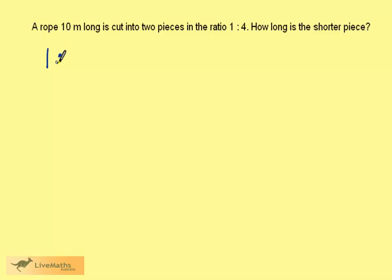We have a ratio of 1 to 4. 1 plus 4 equals 5, telling us that we need to divide the rope into 5 equal parts. The rope is 10 metres long. Dividing 10 metres by 5 gives us that each part is 2 metres long. We want 1 part, and 4 parts will be 8 metres.